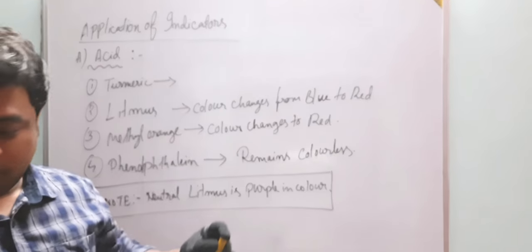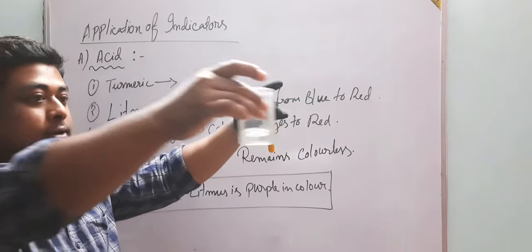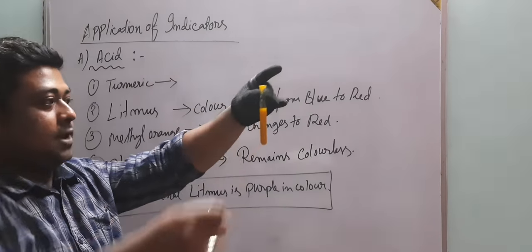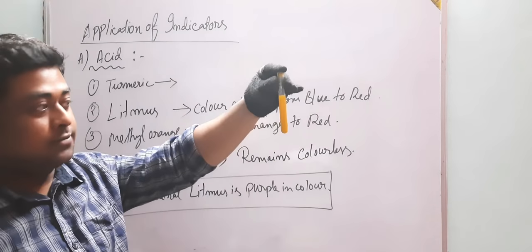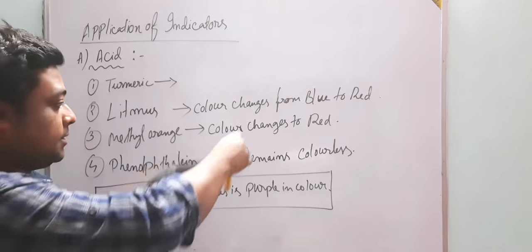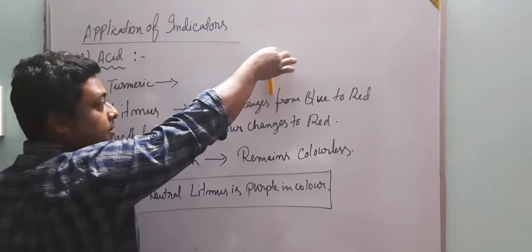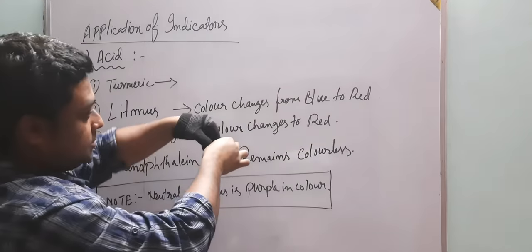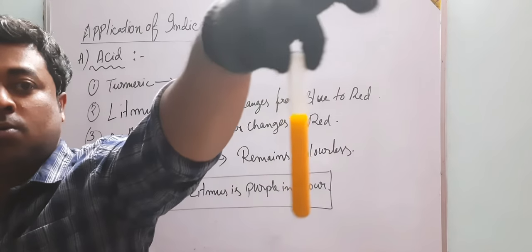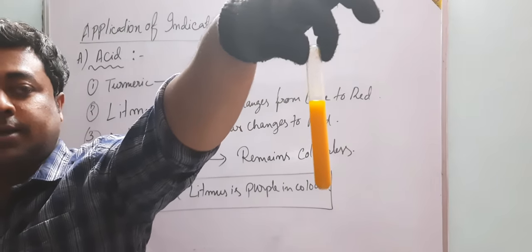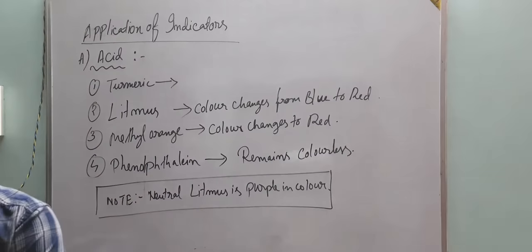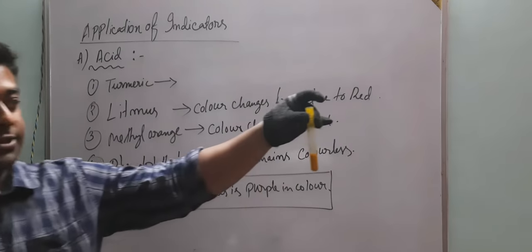Now in one test tube I am going to add dilute sulfuric acid. I have added dilute sulfuric acid and gently mixing it. You can see that there is no change in color — the color remains yellow.